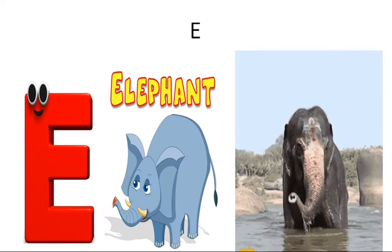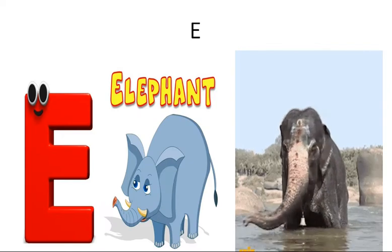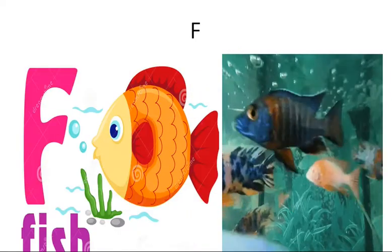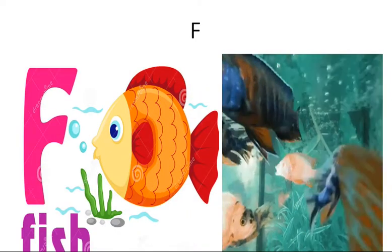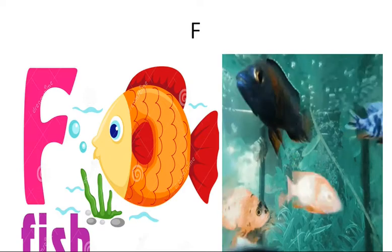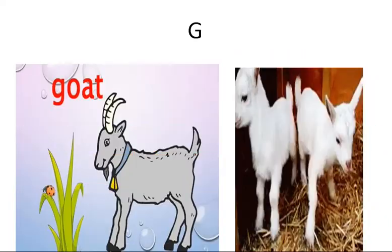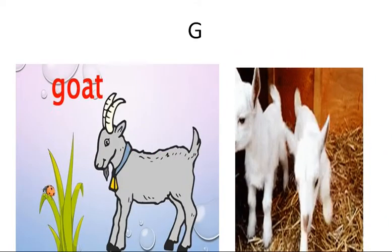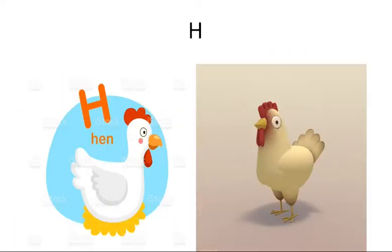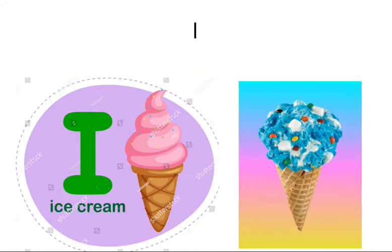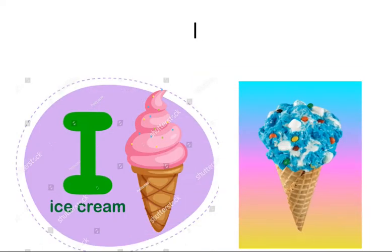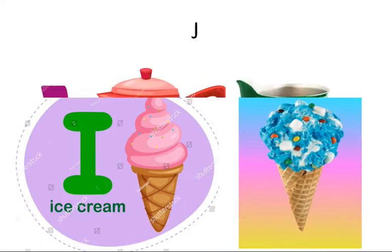E for elephant, F for fish, G for goat, H for hen, I for ice cream.